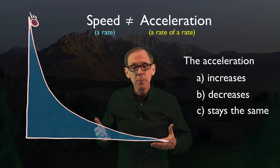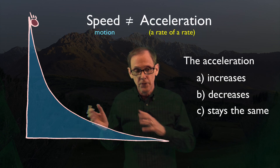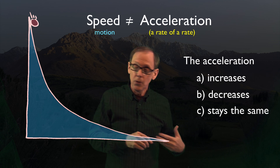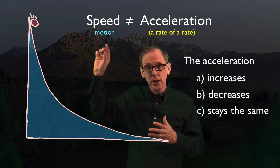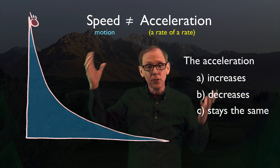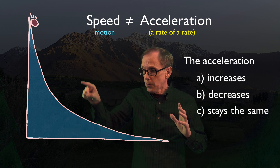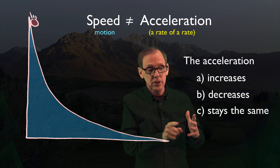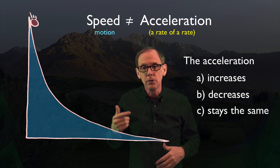Speed is a measure of motion. The faster your motion, the faster your speed. So let's look at this ball. Initially, when you let go of it, its speed is zero, but as it rolls down the ramp, it goes faster and faster and faster. Its speed clearly is increasing.